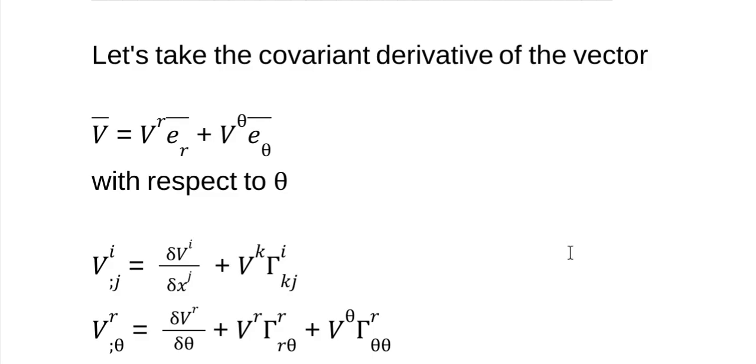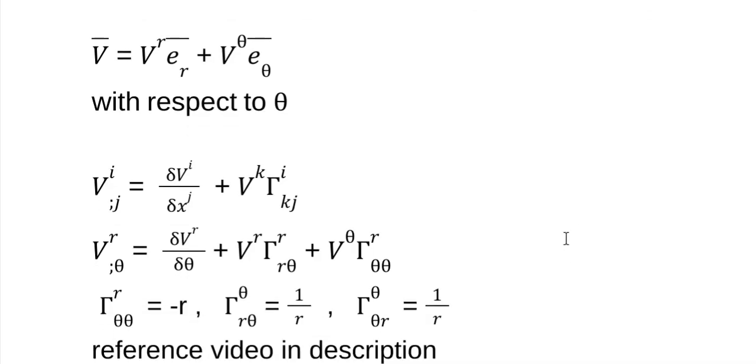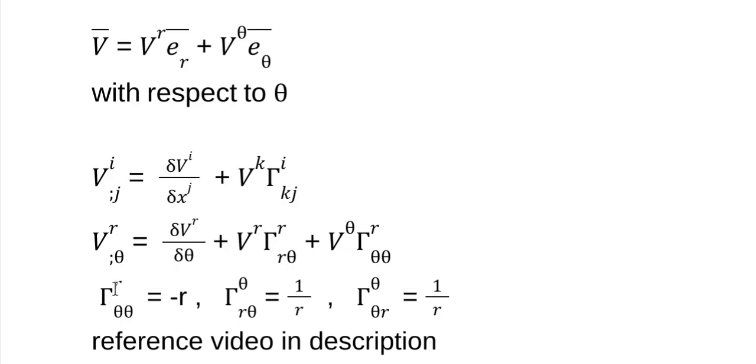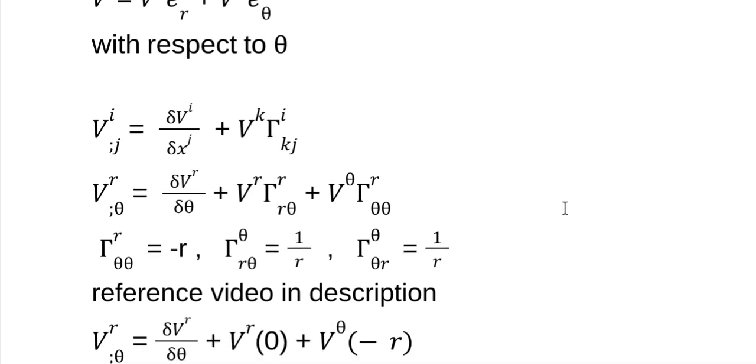Now in polar coordinates, here are the only non-zero Christoffel symbols. There's three of them and here they are. And once again, the link to how, where these come from is in the description. If you really want to dig into these things, that's where you're going to find it. So now we're just going to substitute these in here.